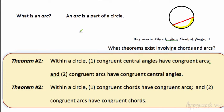So what are some theorems we have to learn about chords and arcs? First theorem — within a circle, there are two things: congruent central angles have congruent arcs, and congruent arcs have congruent central angles.